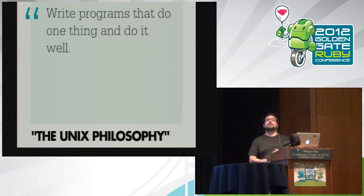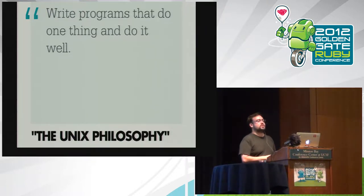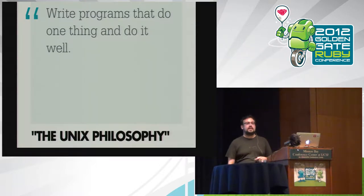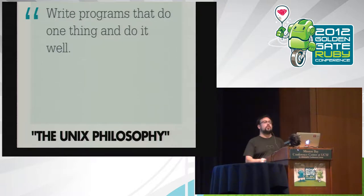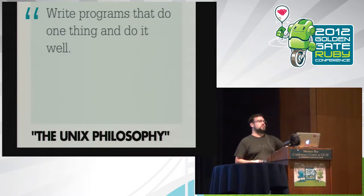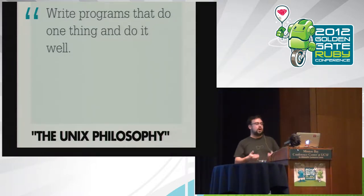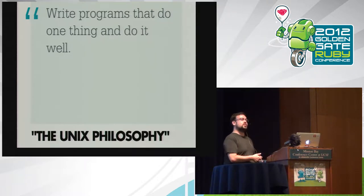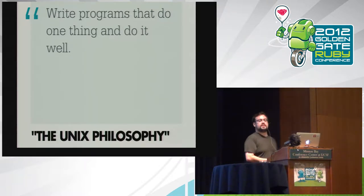There's a big objection to a lot of things I'm saying, which is: you can basically avoid all software problems by writing programs that do one thing and do it well. Then if some assumption changes, no problem — just remove the little tiny piece of your program that has the violated assumption, replace it with something that has better assumptions, and everything will be great. Writing good, decoupled, object-oriented software is going to be a way you deal with certain problems. But I think this misses some of the mark.